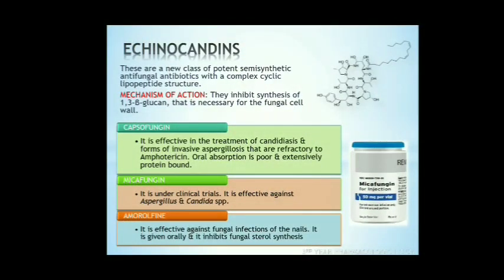Echinocandins. These are a new class of potent semisynthetic antifungal antibiotics with a complex cyclic lipopeptide structure. They inhibit synthesis of 1,3-beta-glucan that is necessary for the fungal cell wall. Caspofungin, micafungin, and amorolfine are some examples. Caspofungin is effective in the treatment of candidiasis and forms of invasive aspergillosis refractory to standard treatment. Micafungin is under clinical trials and is effective against Aspergillus and Candida species. Amorolfine is effective against fungal infections of the nails and inhibits fungal steroid synthesis.